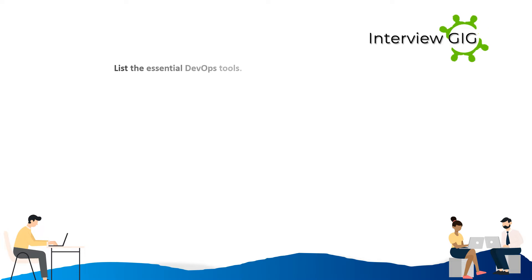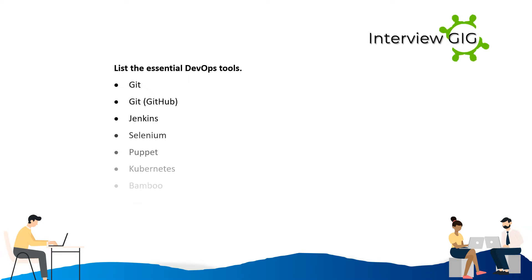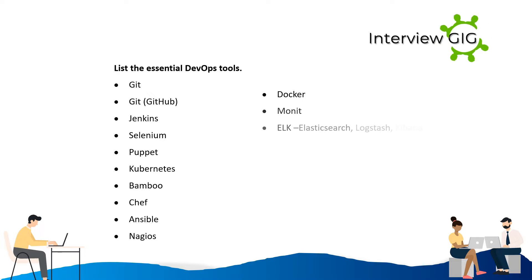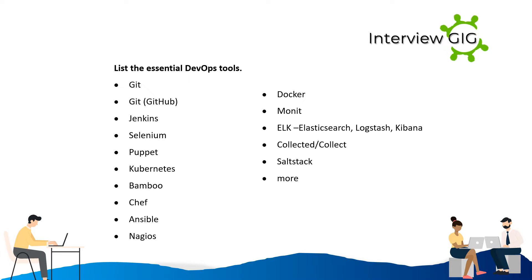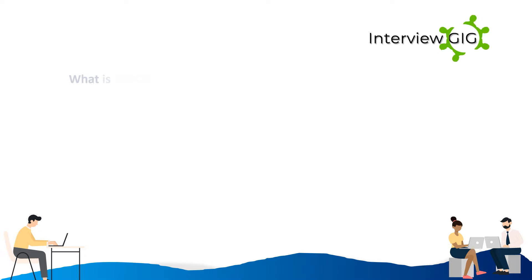Essential DevOps tools include: Git, GitHub, Jenkins, Selenium, Puppet, Kubernetes, Bamboo, Chef, Ansible, Nagios, Docker, Monit, ELK (Elasticsearch, Logstash, Kibana), Collectd, Solvstack, and more.